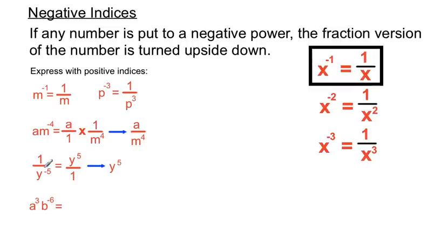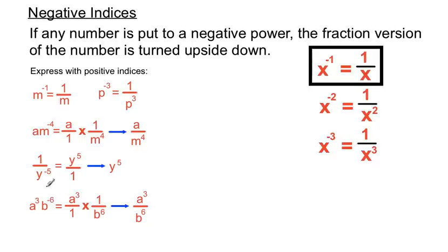And this one is another combination, a bit like our a times m to the minus 4. We've got a being cubed and b being put to the power of minus 6. We separate those ideas and write them both as fractions: a cubed is a cubed over 1, and b to the minus 6 is expressed as 1 over b to the 6. Then we multiply across the top and across the bottom — a cubed times 1 over 1 times b to the 6 — giving us a cubed over b to the 6, with both terms now having positive indices.